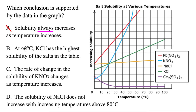For option B: at 40 degrees Celsius, KCl — that's the green one — has the highest solubility of all the salts in the table. Let's find that: 40 degrees, we go straight up. KCl is here, but that doesn't have the highest solubility, because the blue and the red are both bigger than it. So B is not true.